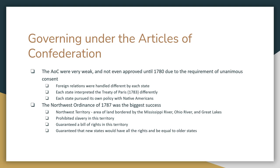On top of all this, states started to pursue their own policies regarding Native American tribes. In the Northwest — meaning Pennsylvania, New York, and Ohio — several wars broke out that weren't settled until 1795. If I were to point to any actual success that the Articles of Confederation had, it would be regarding the Northwest Territories and the Northwest Ordinance of 1787. Now, the Northwest Territory was not the Pacific Northwest we think of today. In 1787, it consisted of land that would become Ohio, Michigan, Indiana, Wisconsin, Minnesota, and Illinois — basically the area bordered by the Mississippi River, the Ohio River, and the Great Lakes.